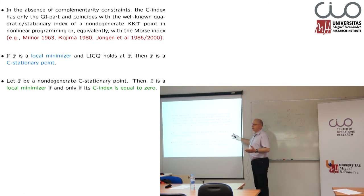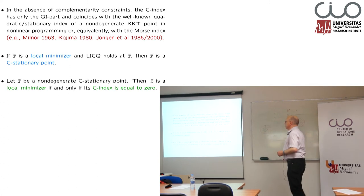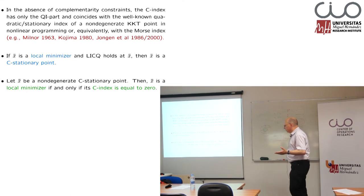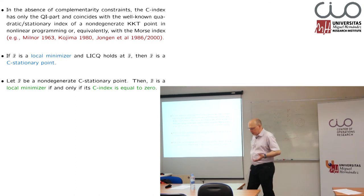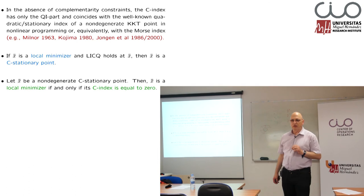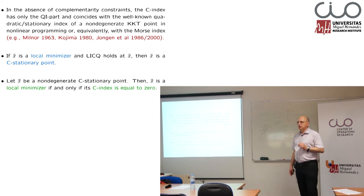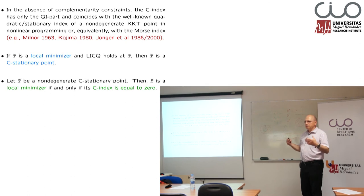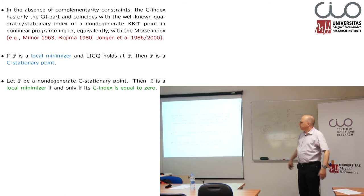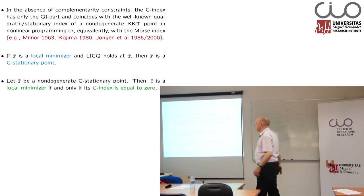C stationary point — why is the concept introduced? This is obviously one property which is important in optimization. The quadratic index as well as the stationary index characterize, in a unique way, which kind of stationary point or C stationary point we have. A stationary index equal to zero means local minimizer if and only if the index is zero; local maximizer if and only if the index is n. And all indices between zero and n refer to saddle points. Here we can make the same: if we have a local minimizer, this is if and only if the C-index is equal to zero, meaning both b_i and q_i have to be equal to zero.